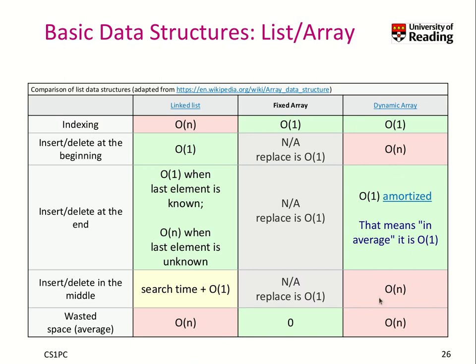What is a dynamic array? It's the idea that you grow and shrink a fixed array depending on the size. For example, once an array is full, instead of adding one new element and copying all the data out, you would double the size of the array and then copy it over. Then you can insert again a couple of new elements rather quickly. So this is a dynamic array in a nutshell.